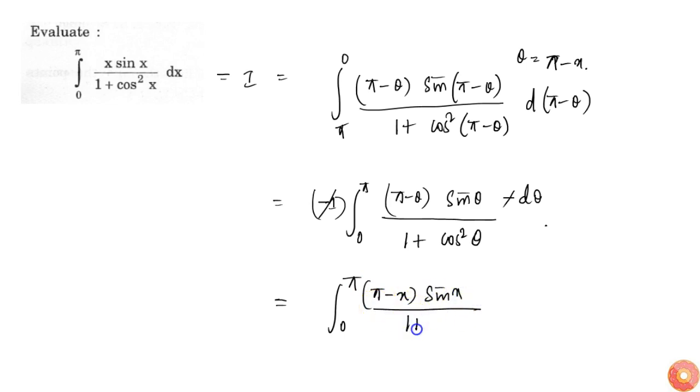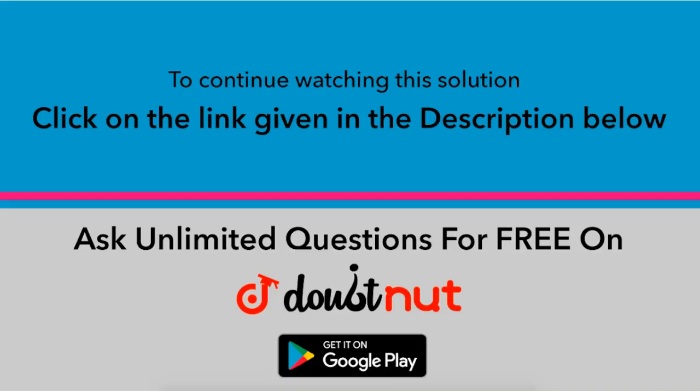1 plus cos square x dx. Now from this I can say this is simply equal to integral 0 to π, π sin x by 1 plus cos square x dx minus integral 0 to π, x sin x by 1 plus cos square x dx.